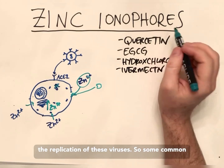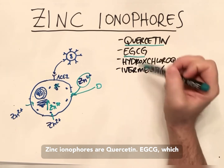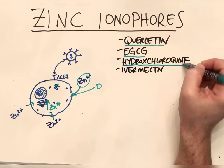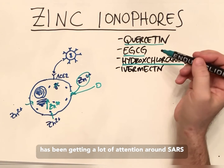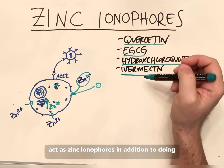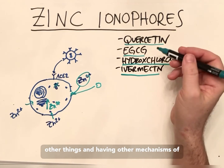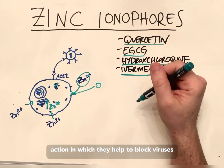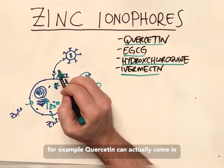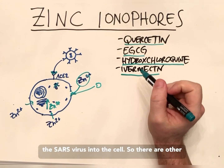Some common zinc ionophores are quercetin, EGCG which is one of the ingredients in green tea, hydroxychloroquine which is a drug getting a lot of attention around the SARS virus, and ivermectin. All these substances act as zinc ionophores in addition to having other mechanisms of action. Quercetin, for example, can actually come in at the ACE2 receptor and block the entry of the SARS virus into the cell.